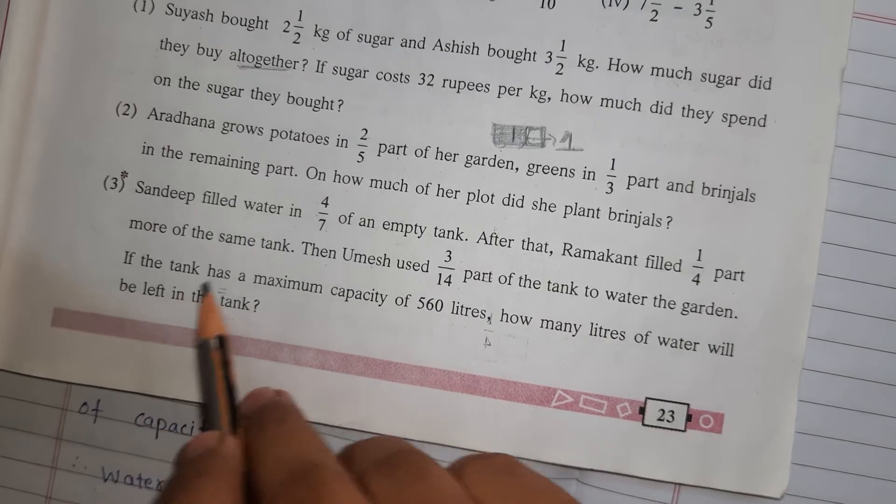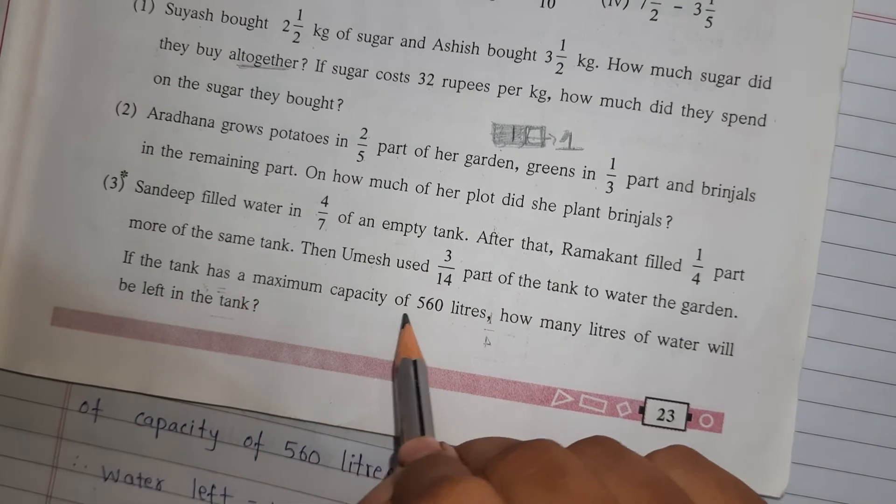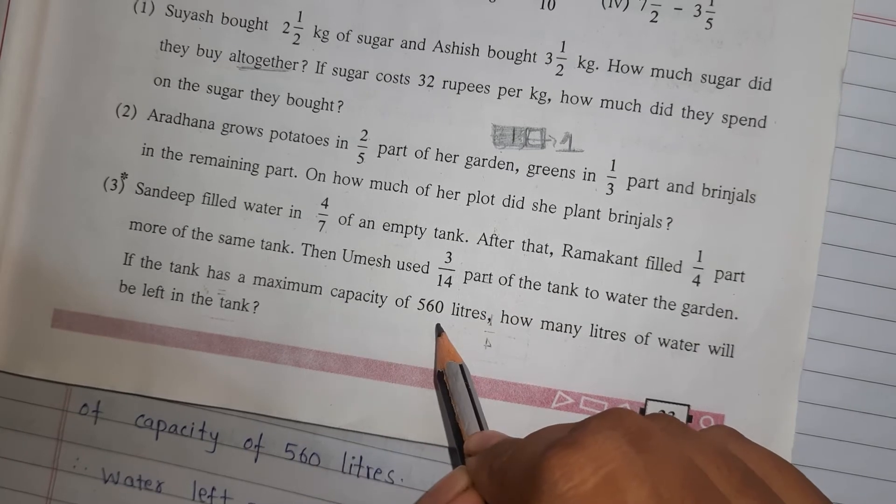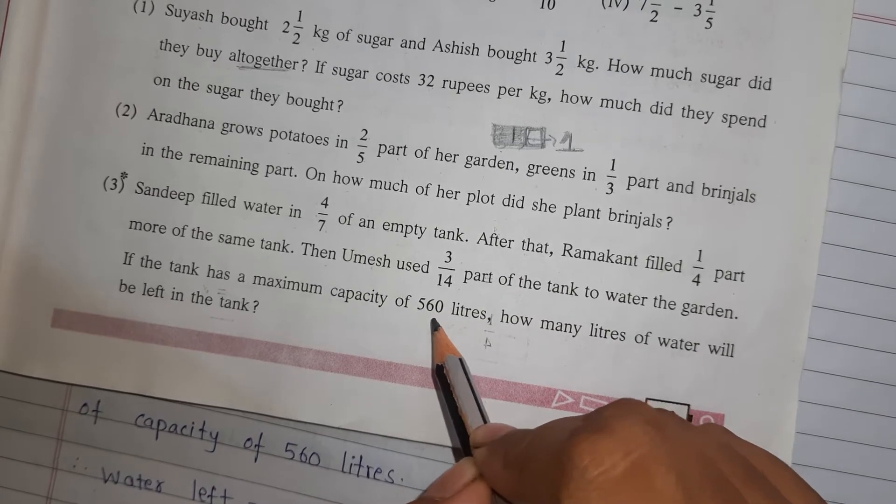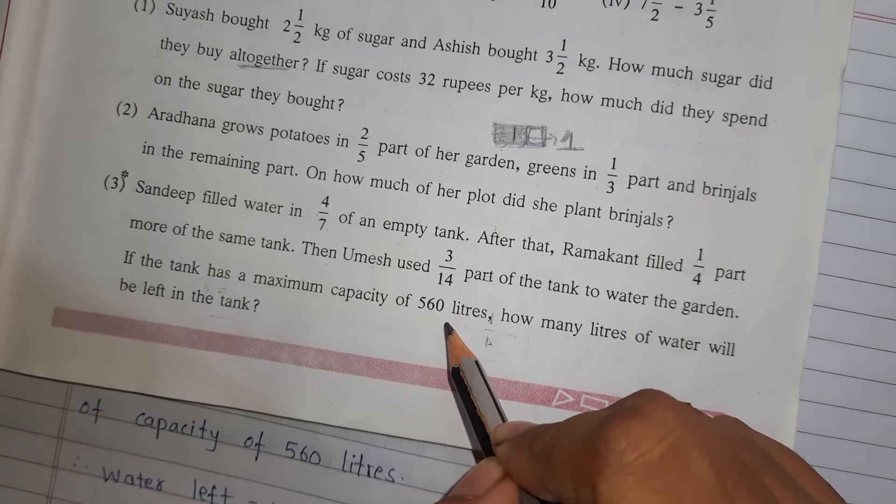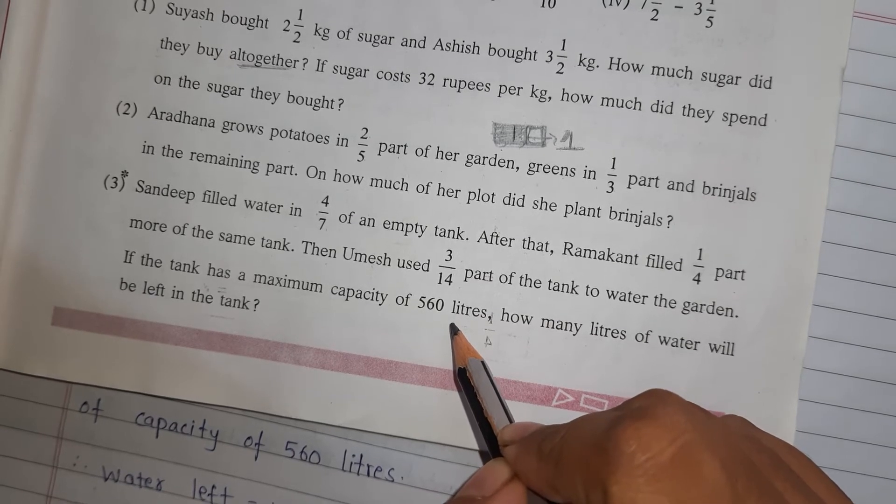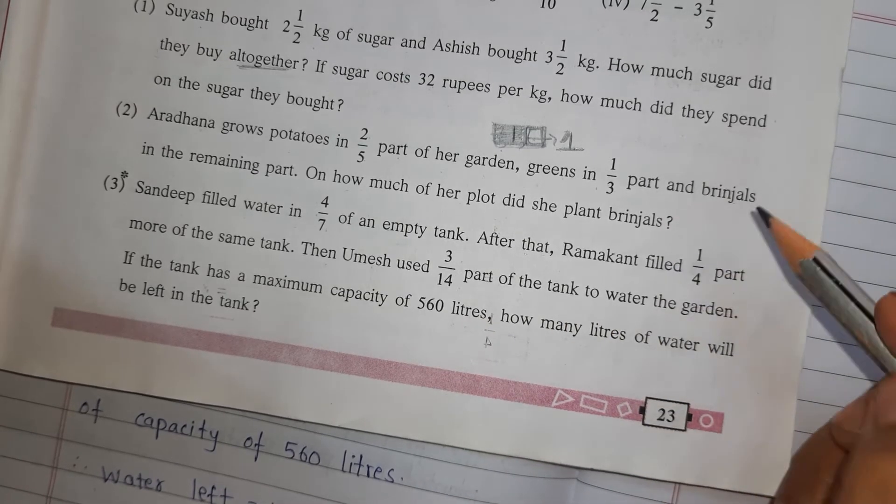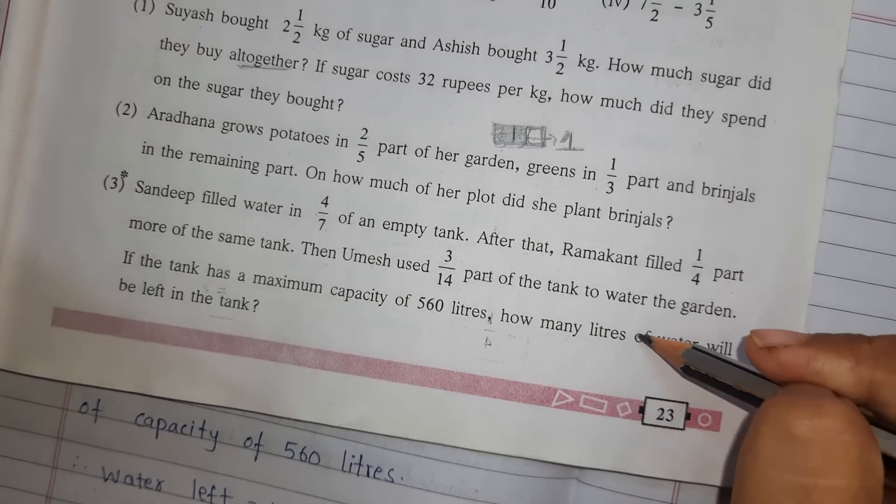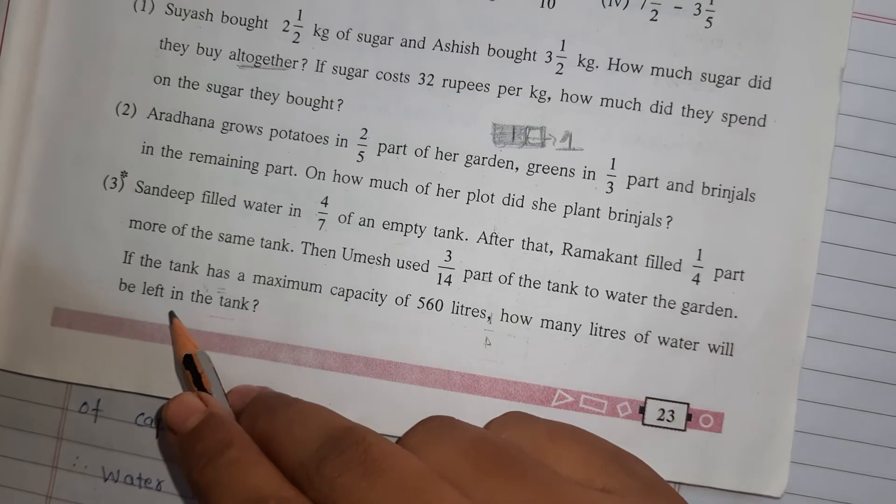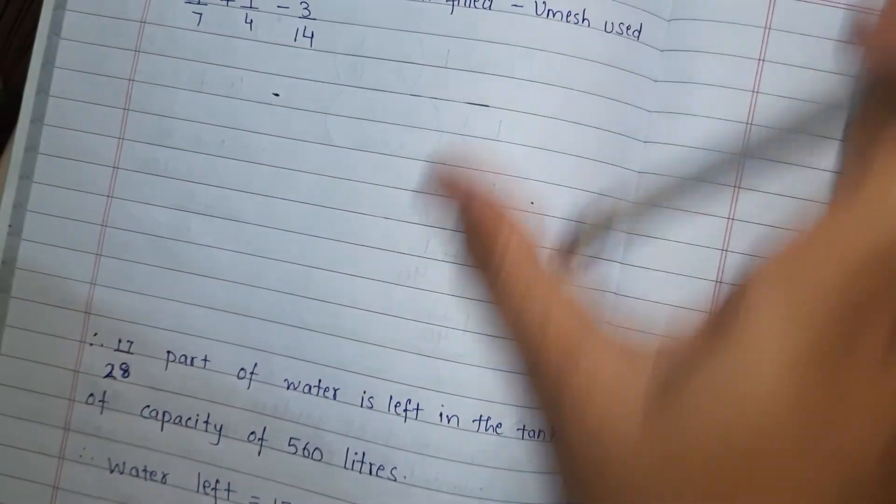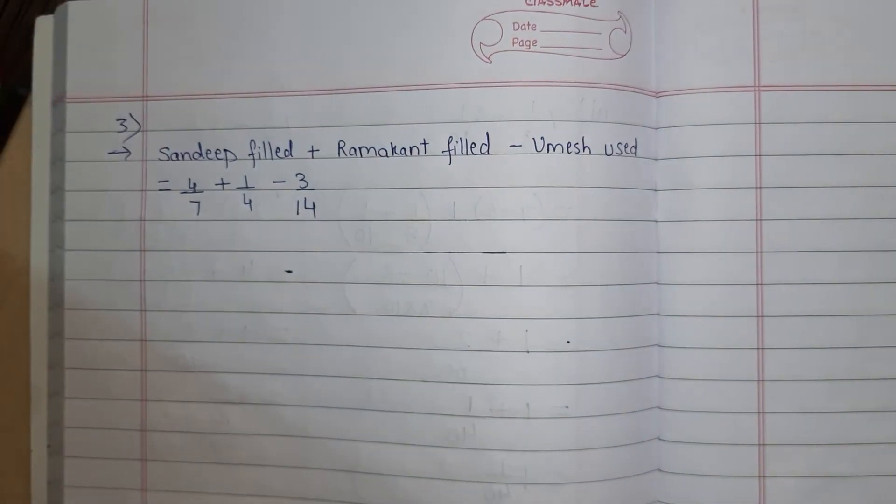Next if the tank has a maximum capacity of 560 liters. What is the capacity of the tank? 560 liters. Means what? The water that can be filled in the tank it can be 560 liters. So we have to find out how many liters of water will be left in the tank. Okay. So first we will start with our problem.